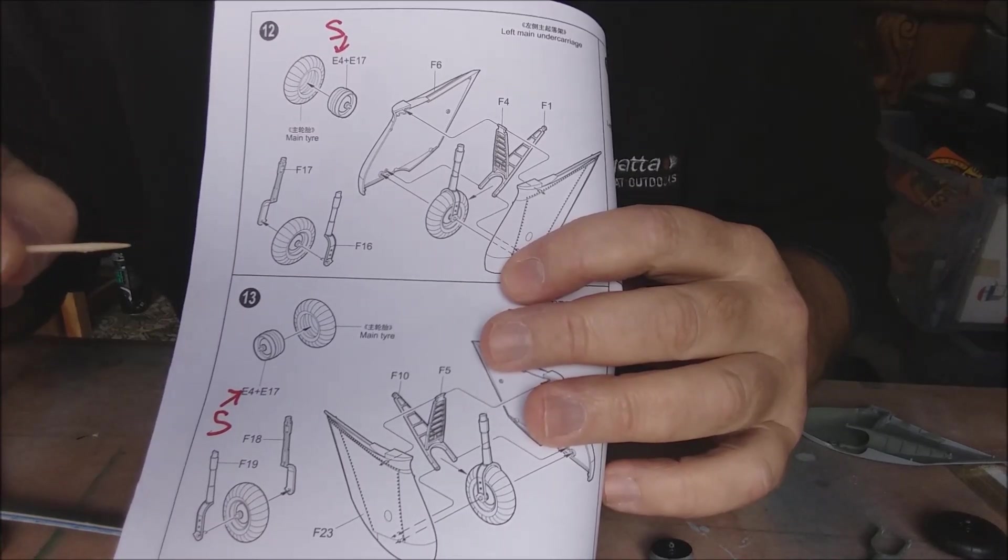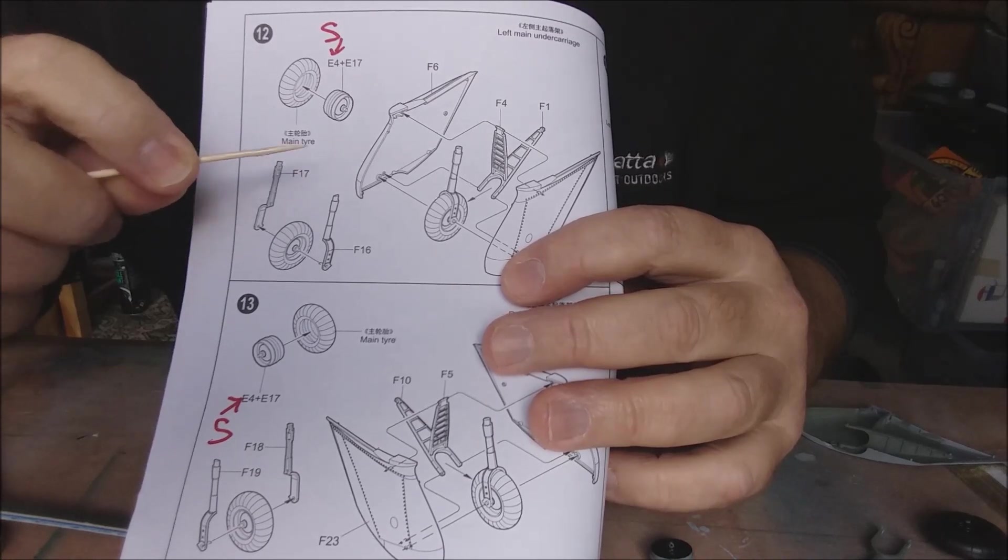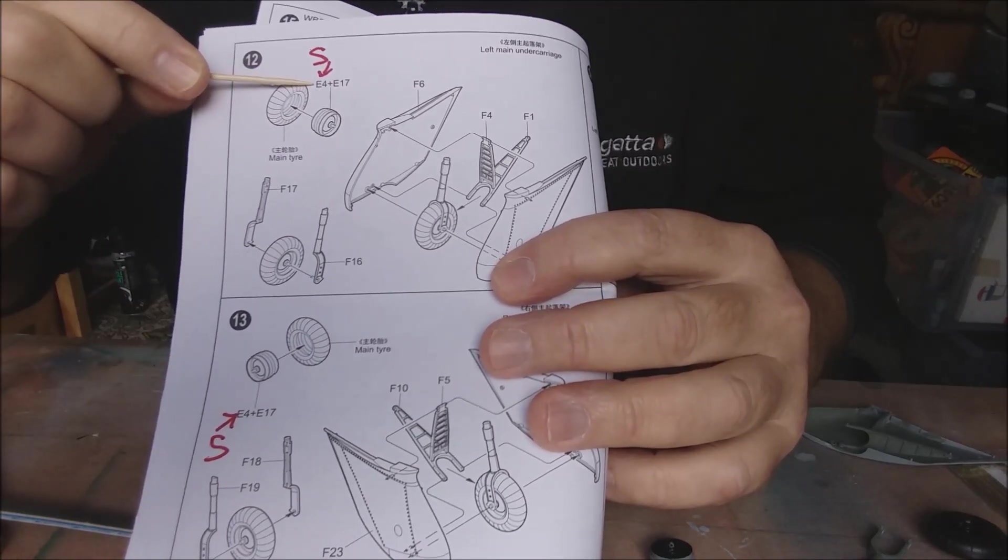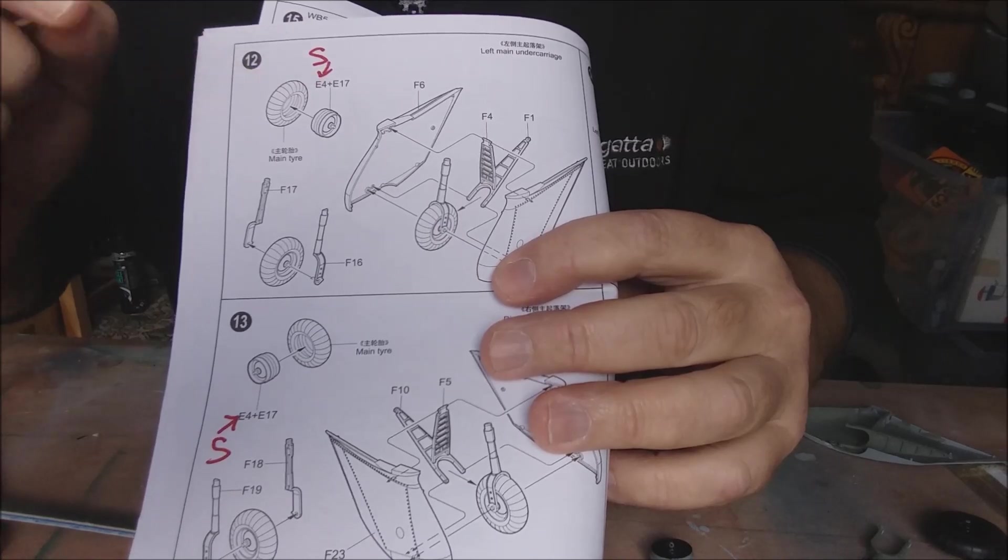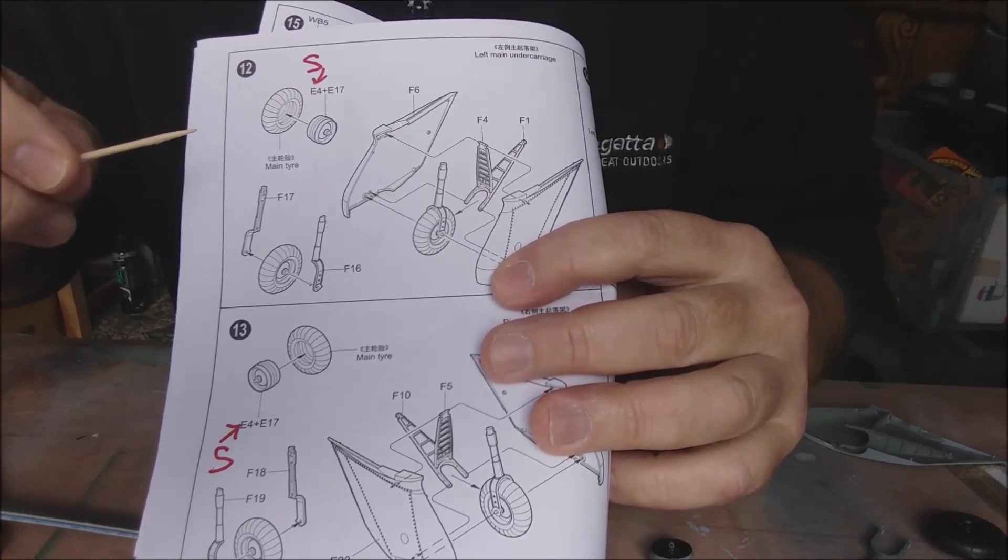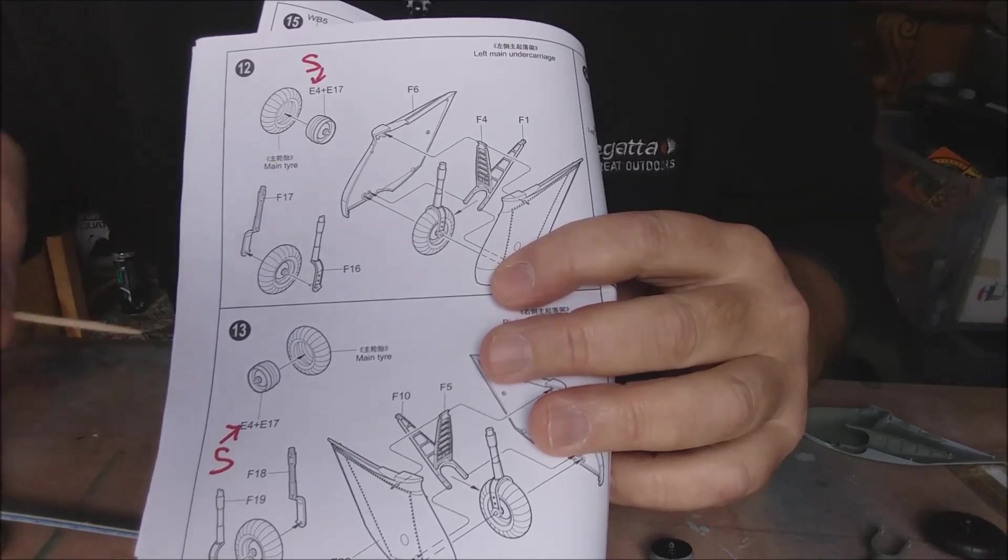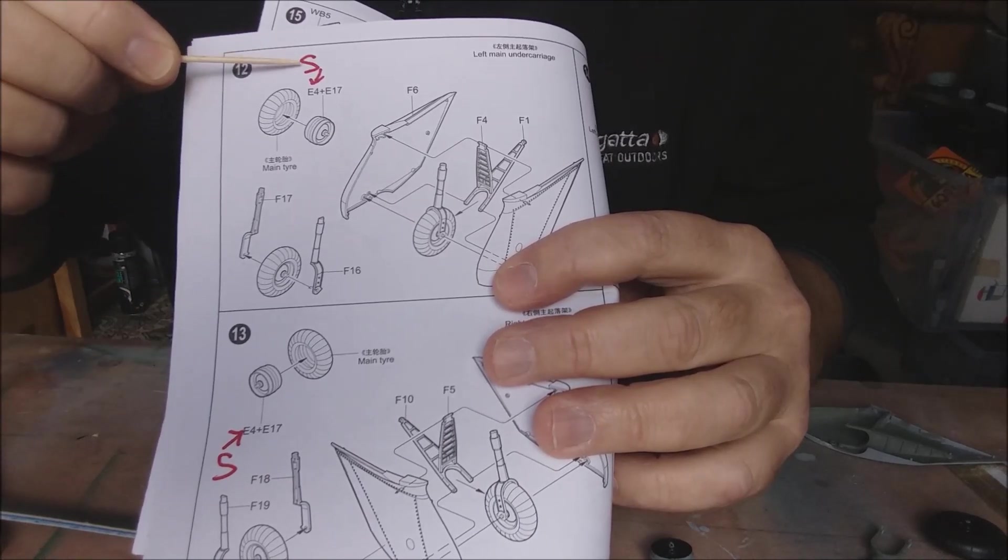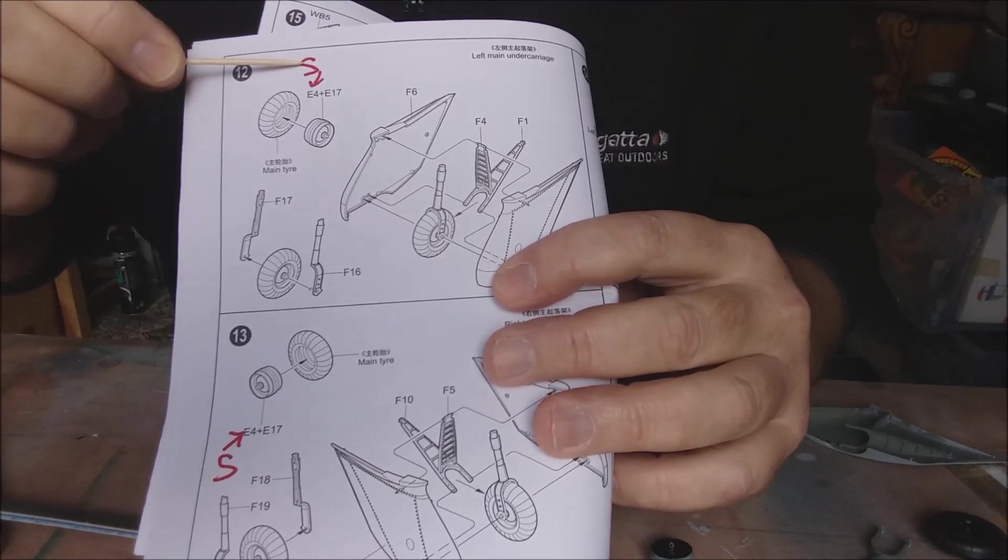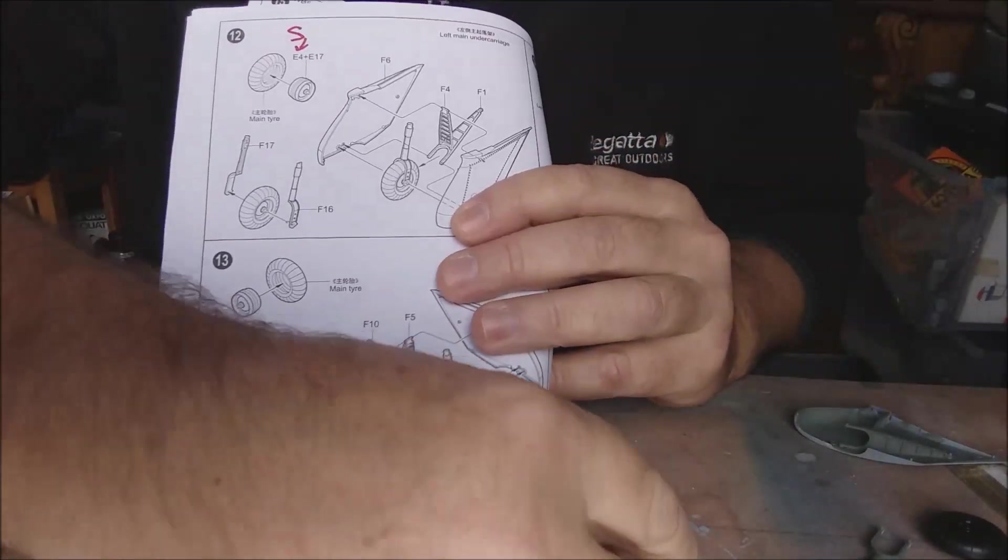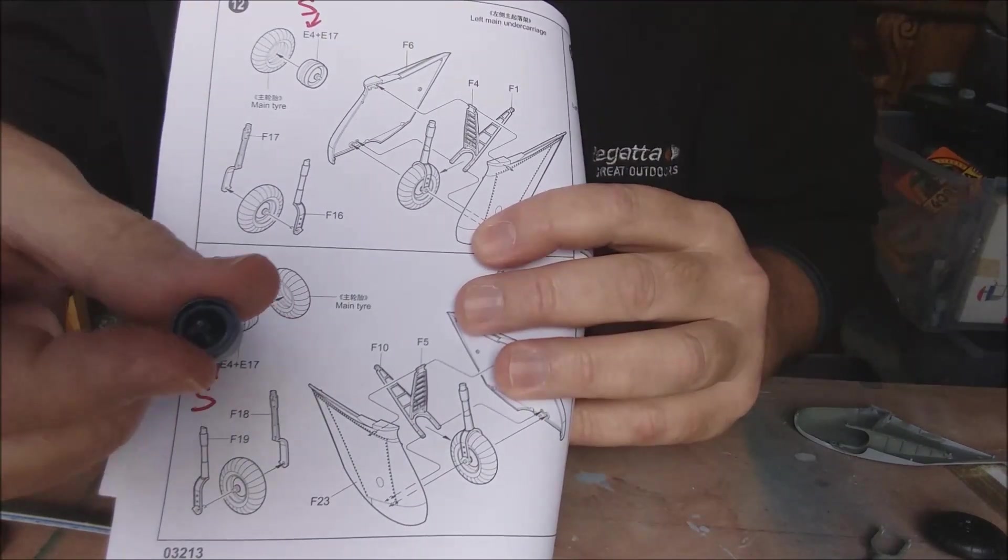Okay, so I'm randomly jumping around doing little bits and bobs and I wanted to do the wheels. The instructions tell you to use E4 and E17. I looked at the instructions and looked at the layout and that wasn't right, they were the wrong numbers. So I assumed that they were S, so I've been and got the parts off S and put them together.